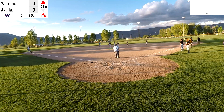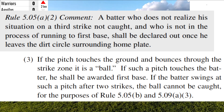So a couple of thoughts here on what we're talking about. First, it doesn't matter that first base was occupied — there were two outs, so the drop third strike or uncaught third strike is in play here. Secondly, the base coach was out there telling the umpire that the batter was inside the batter's circle. The rule states: a batter who does not realize the situation on a third strike not caught, and who is not in the process of running to first base, shall be declared out once he leaves the dirt circle surrounding home plate.